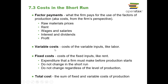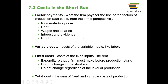Variable costs, like labor, are going to change in the short run. Fixed costs, like rent, may not change in the short run. Total cost is the summation of these two. We're also going to talk about average total cost — total cost divided by quantity — marginal cost (the change in total cost over the change in quantity), and average variable cost — variable cost divided by quantity of output.